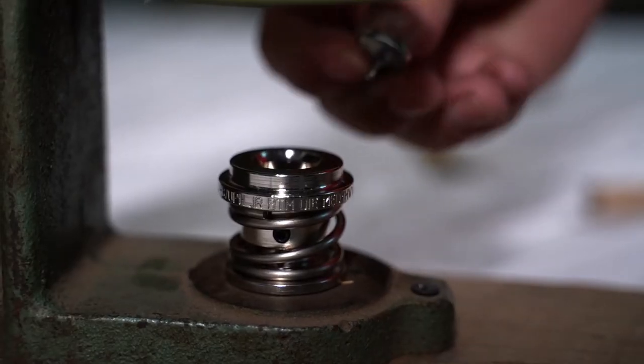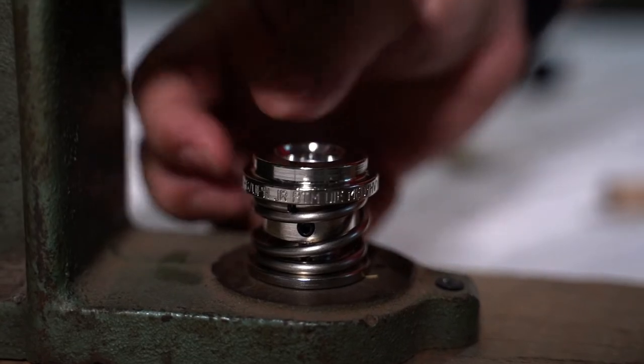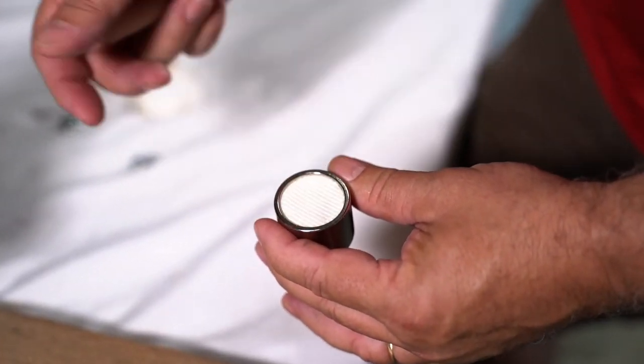Place a button back, hook side down, on the button die. On the top die, lay a fabric cutout right side down.